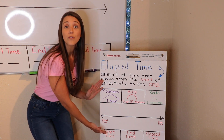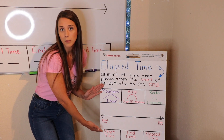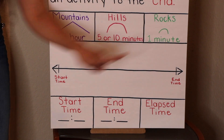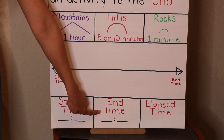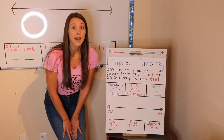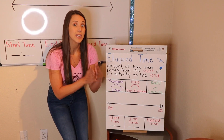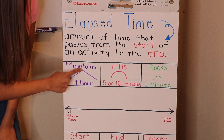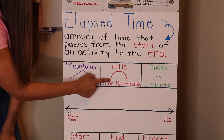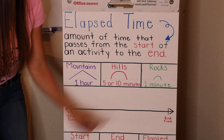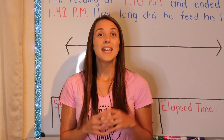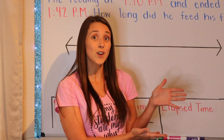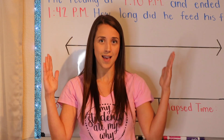Here's how we are going to figure out elapsed time when reading word problems. This is my number line. This is the start of my time, and this is my end time. When you're reading the problem, you will put in your start time and your end time here before filling in your number line. We are going to use mountains to show one hour that went by, hills for five or ten minutes, and rocks for one minute.